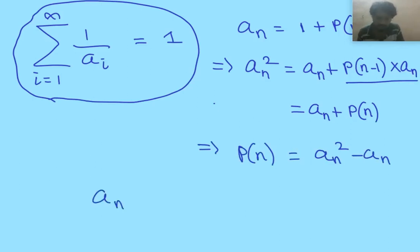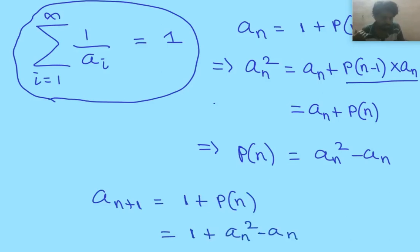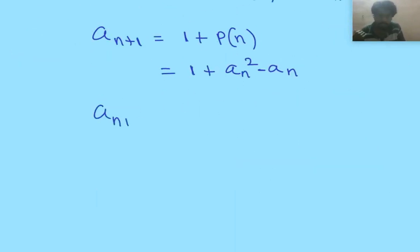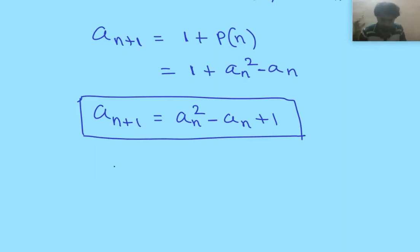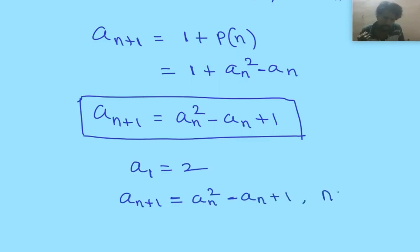Now consider the (n+1)th term. a_{n+1} is given by 1 plus the product of the first n elements, and the product of first n elements is simply a_n squared minus a_n. So a_{n+1} equals a_n squared minus a_n plus 1. Instead of defining the nth element in terms of all the first n minus 1 terms, this recurrence tells the nth element in terms of just one element — the (n-1)th element. So we have this nice recurrence where a_1 equals 2.